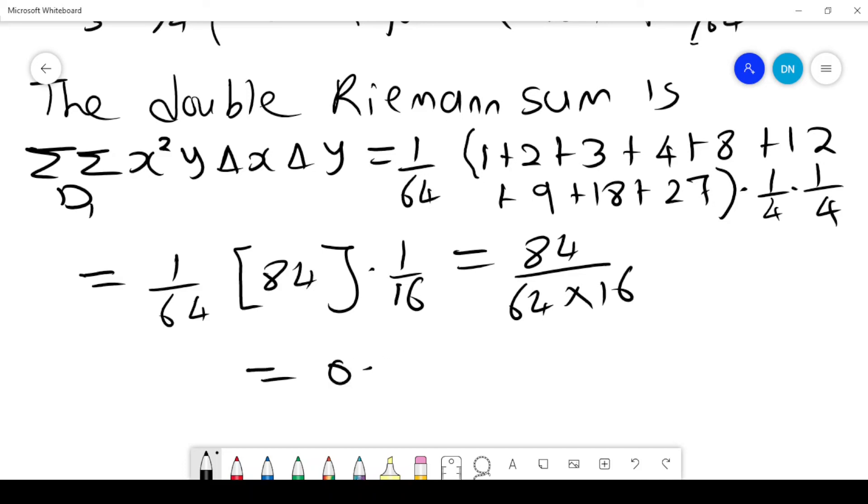And this will give us 0.08203125, and that is the value based on the double Riemann sum. That is the procedure that you need to take to be able to compute the double Riemann sum.